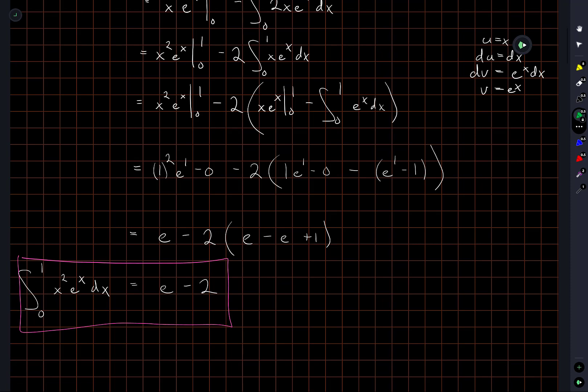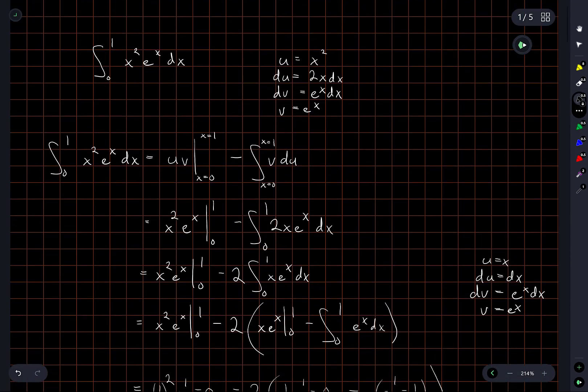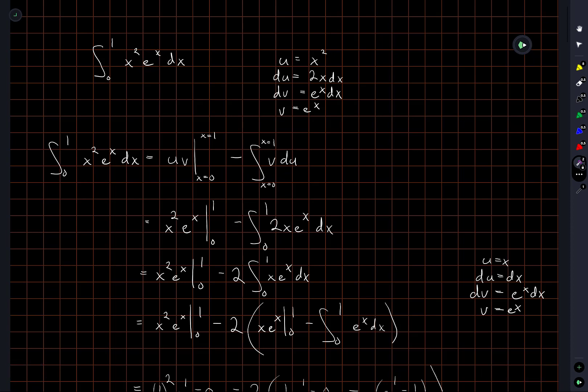Fairly straightforward overall. You know, the only key here was recognizing in the original function we're trying to integrate that I have something that I know how to take a derivative of easily multiplied by something that I know how to take an integral of very easily. And so this is a perfect situation to use integration by parts.